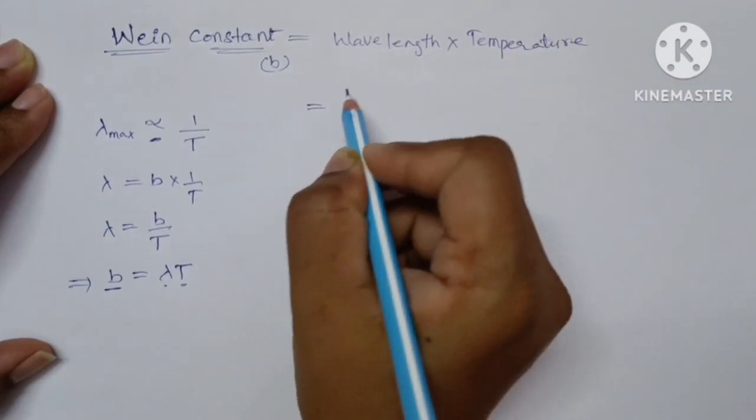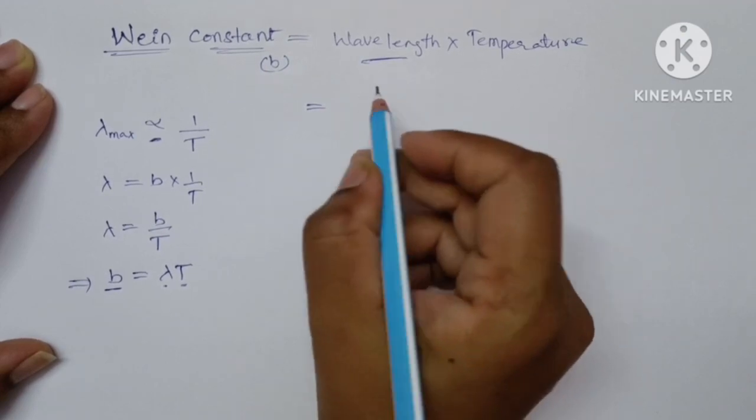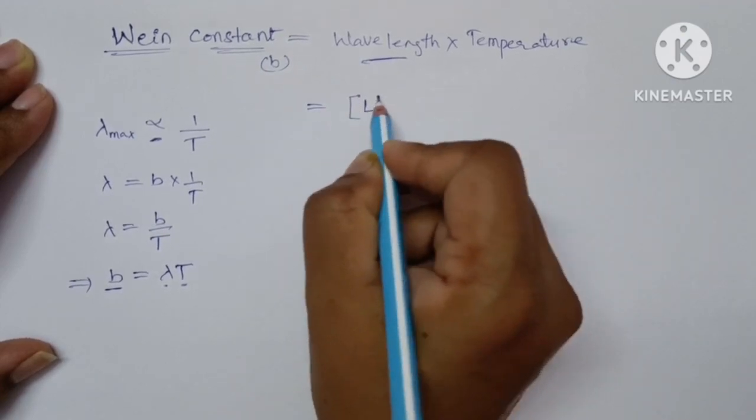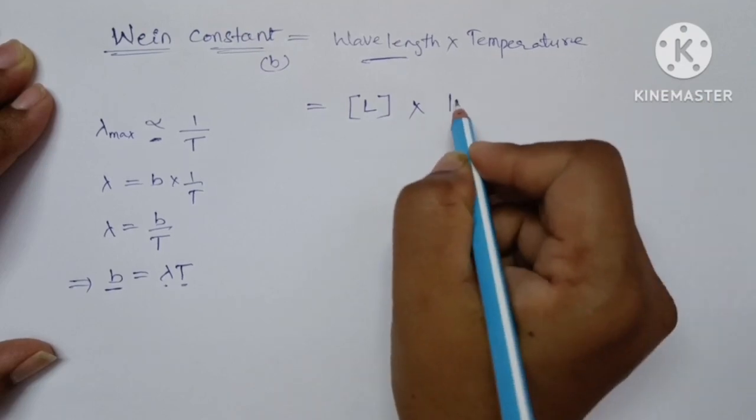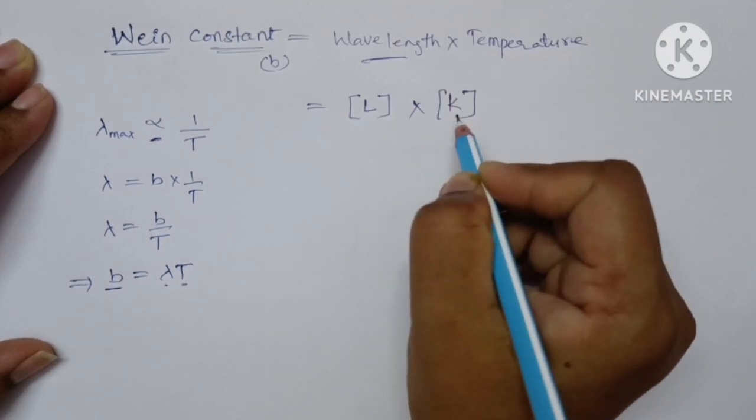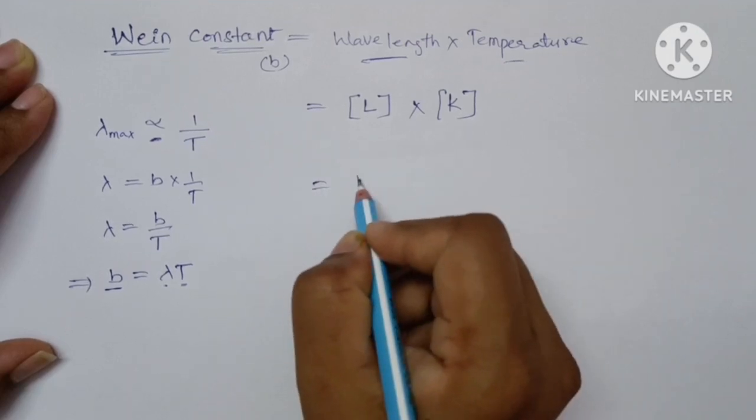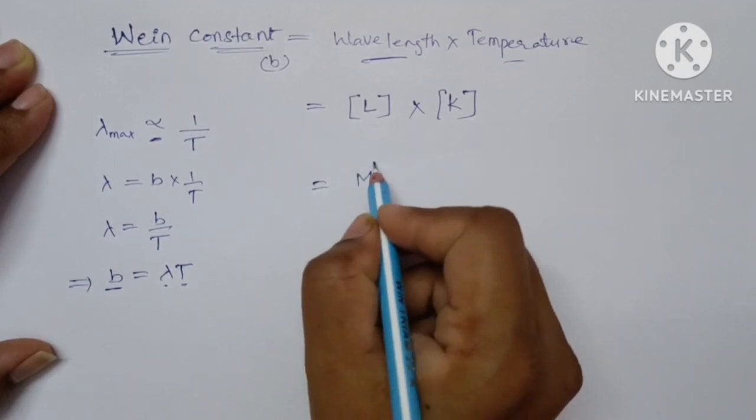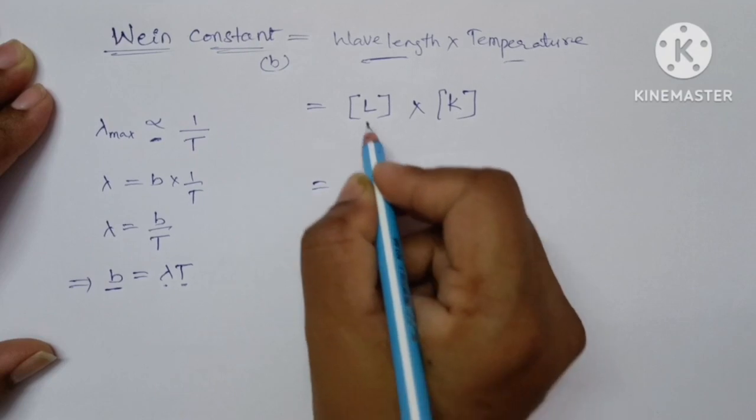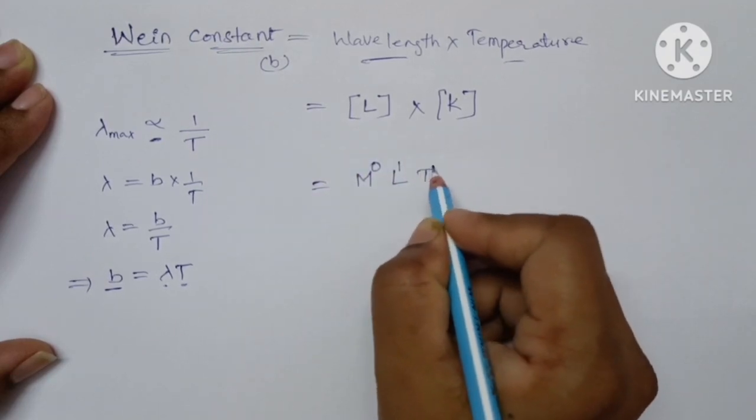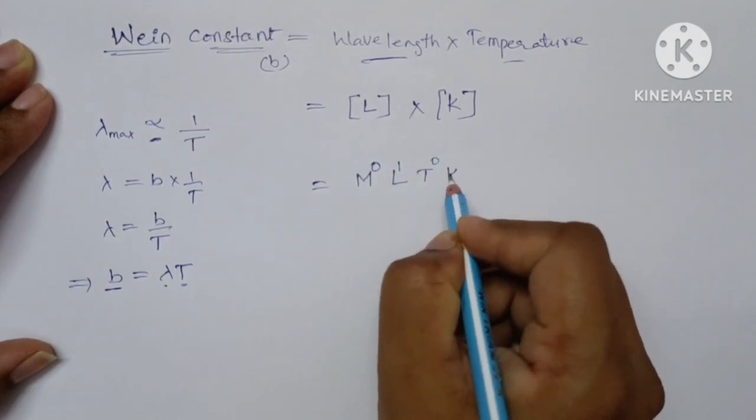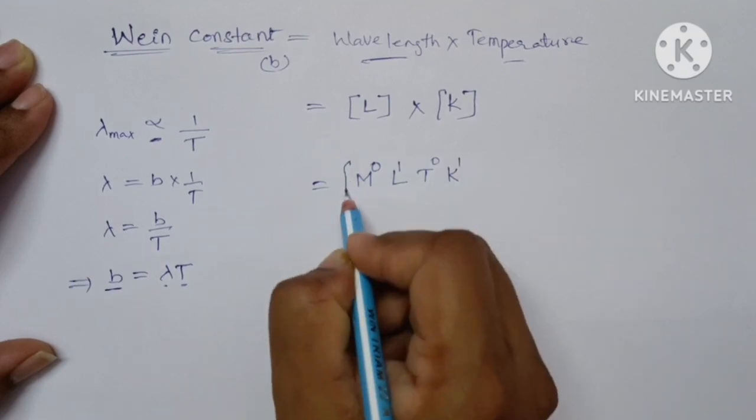So which is equal to wavelength is measured in terms of meter so which is expressed in terms of L, and here temperature is represented with Kelvin. The dimensions of temperature is Kelvin. So now write in MLT format: here mass term is absent so m power 0, length term is there L power 1 and time term is absent so T power 0 and Kelvin is there K power 1.